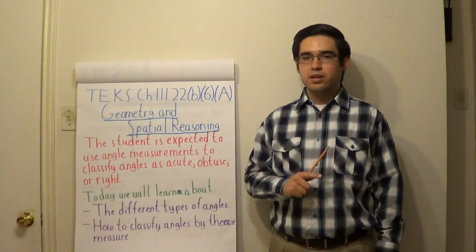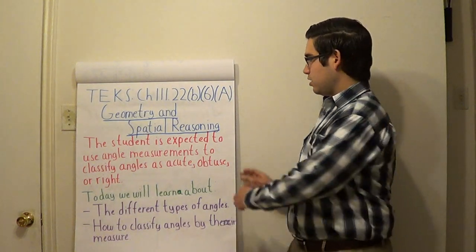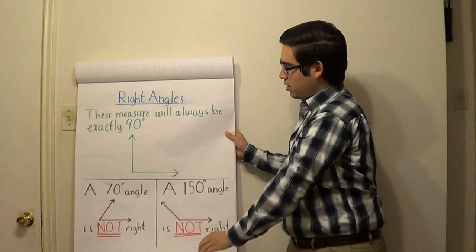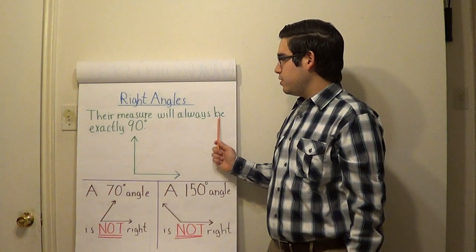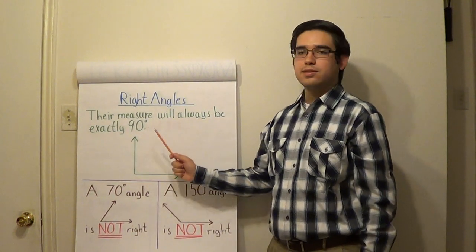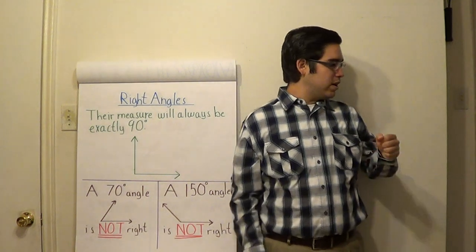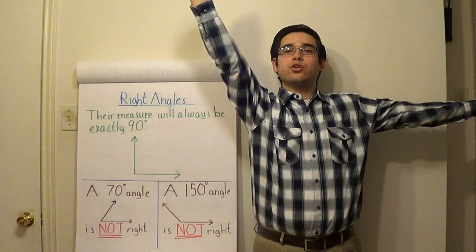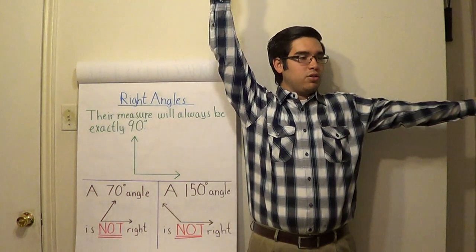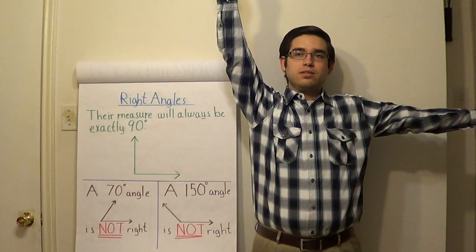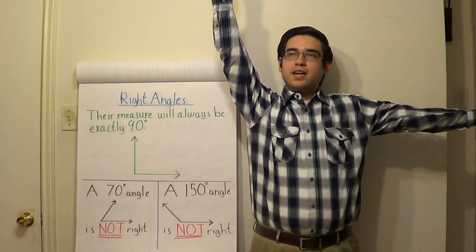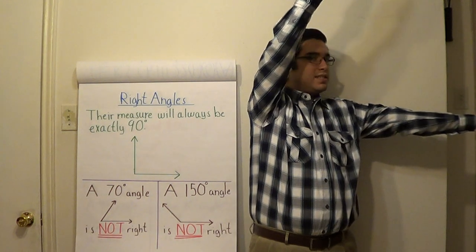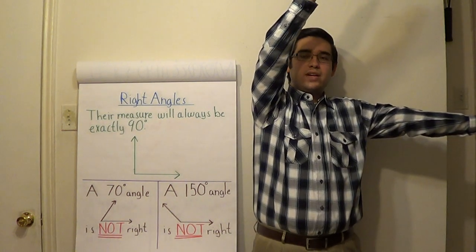The first one we're going to cover is the right angle. Right angles have the property that their measure will always be exactly 90 degrees. Let's say we had our left hand pointing directly away from us and our right hand pointing directly upwards — the angle you just formed with your arms is a right angle. Now if your right arm was slanted towards the left, it would no longer be a right angle because the measure would be slightly less than 90 degrees.